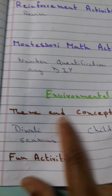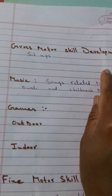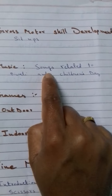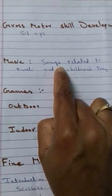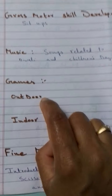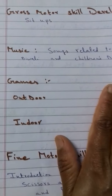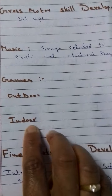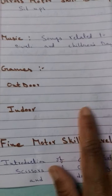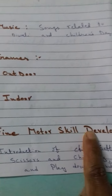Fun activities — you can go according to theme and concept. Gross motor skill — you can ask the child to do sit-ups. Music — you can listen to songs related to Diwali and Children's Day. Games — you can play with the child outdoors if the situation permits, otherwise indoor games that you normally do with the child.